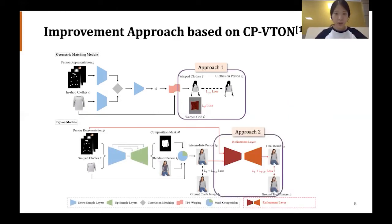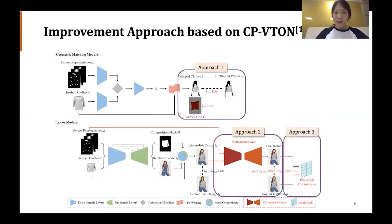And for the second approach, we added the refinement layer to the end of the generator of TOM to calculate both intermediate loss and the final refinement. And to apply the adversarial learning concept, we added a discriminator at the end of the try-on model to train with the refined image to apply the adversarial loss concept.